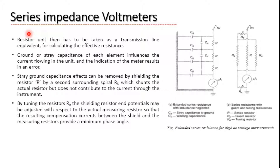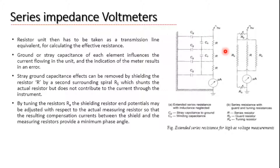For external and large dimension resistances, this equivalent circuit is not valid; each resistance element must be approximated with a transmission line equivalent to calculate the effective resistance. Ground capacitance C_g and stray capacitance C_s influence the current flowing in the unit, resulting in errors in meter readings. C_g exists between the element and ground, and C_s exists between two elements due to the potential gradient. The stray ground capacitance effect can be removed by shielding the resistance element R.